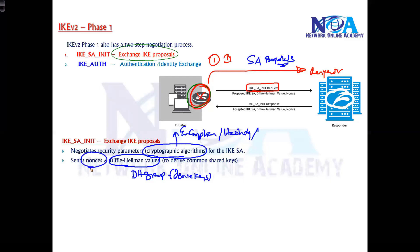Additionally, message one includes nonce values. A nonce is a temporary random number that the initiator generates and sends. The responder takes that number, combines it with the agreed algorithms, and returns a nonce value back. These nonce values are part of the security association proposal messages.